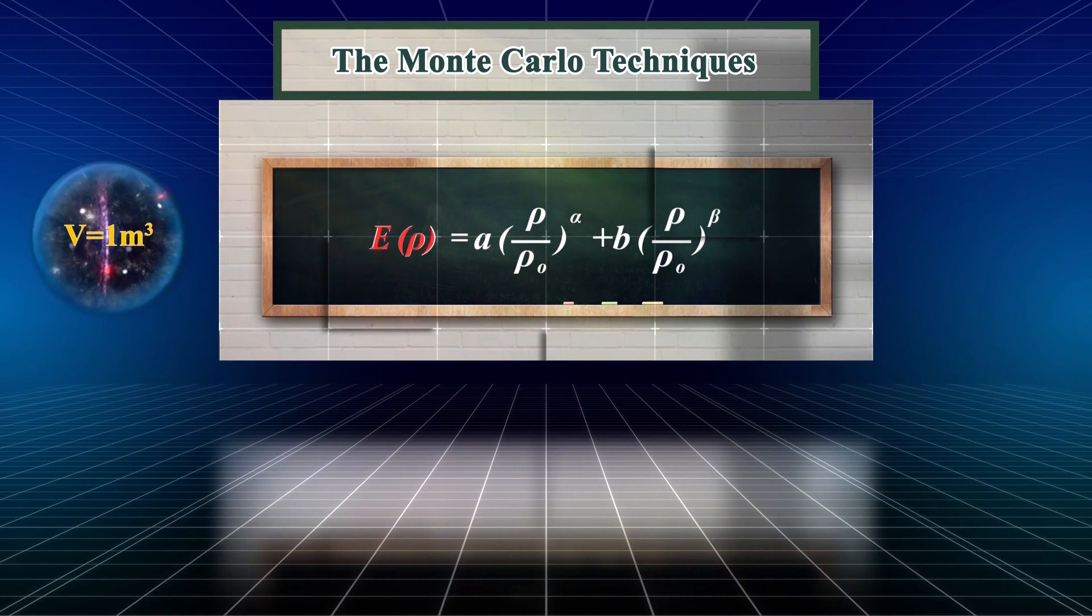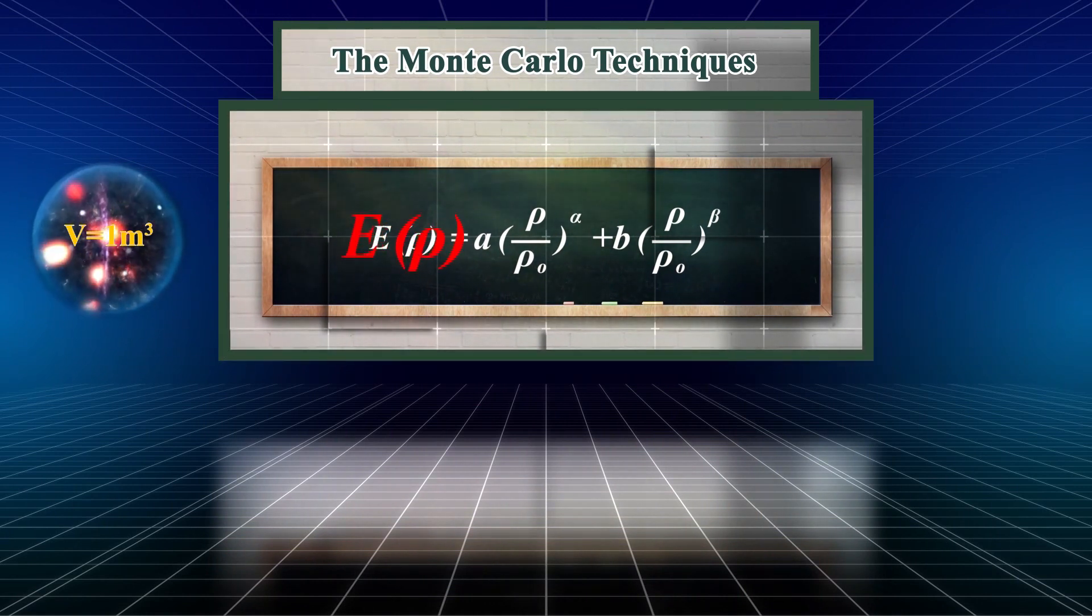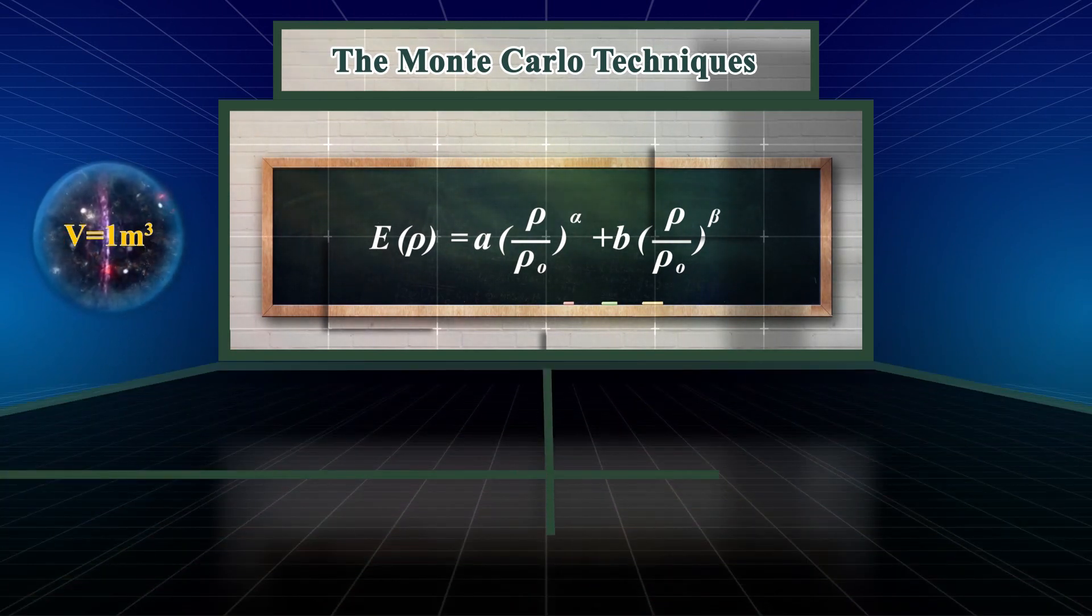In this equation, the E of rho is the energy of each neutron. Alpha, beta, A, and B are free and independent parameters. Rho is the density of the world and rho zero is neutron density. As the neutron density and the nucleus density are equal, so rho zero will be equal to.